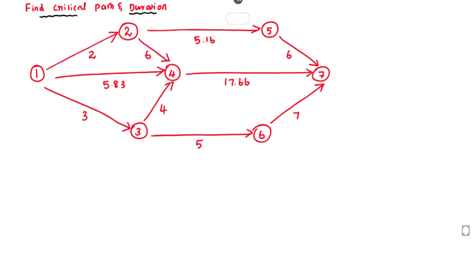The first network path is 1→2→4→7. The corresponding duration is 2 plus 6 plus 17.66, giving a total value of 25.66.